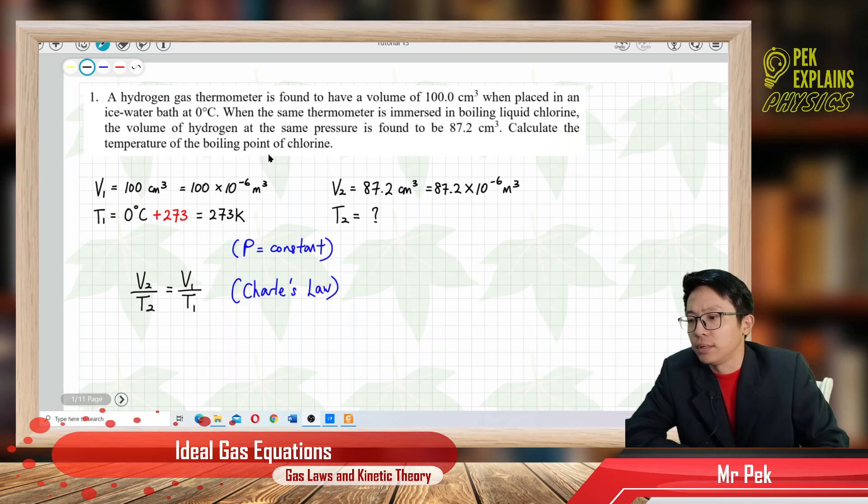Let us extract the information we have in the question. First of all, we have a volume here at this temperature, so we can take this as volume one, V₁, and this as temperature one, T₁. Then we have another volume, 87.2, put in the boiling liquid chlorine.